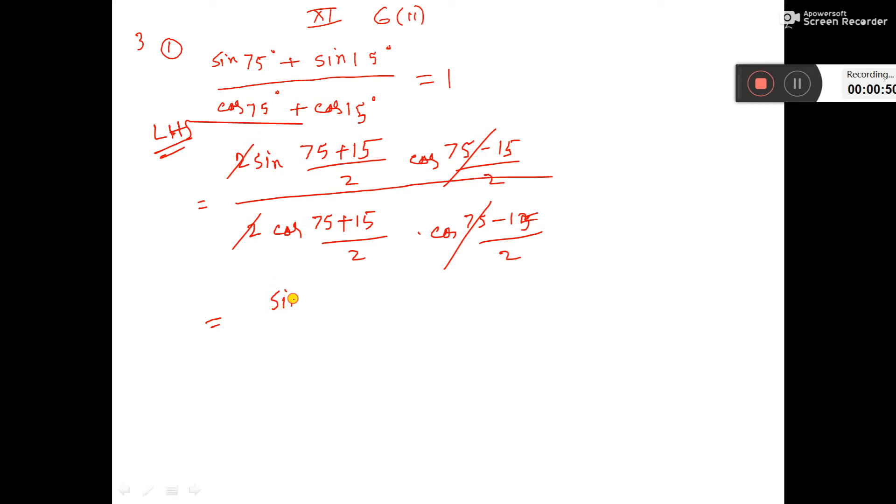Here, sin 75 plus 15 is 90, 90 by 2, that is 45. And here also cos 90 by 2, that is cos 45.